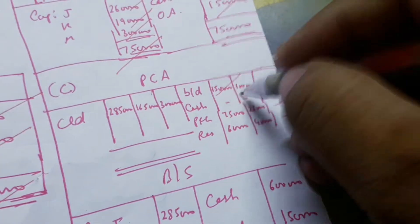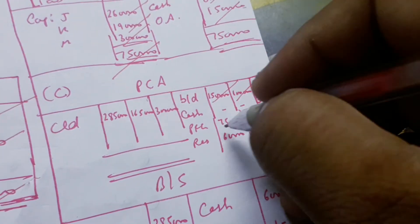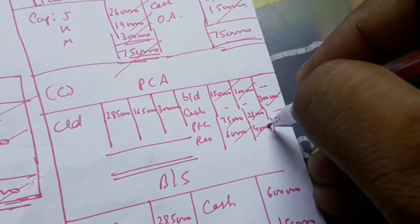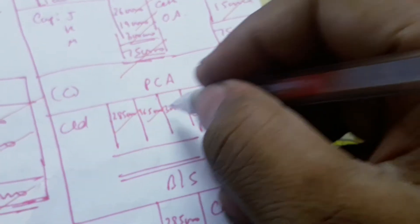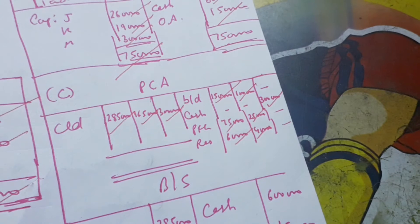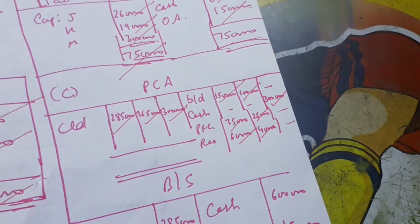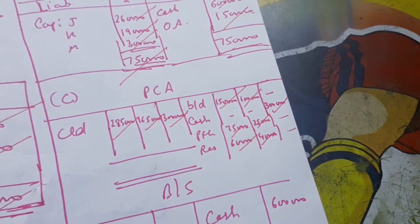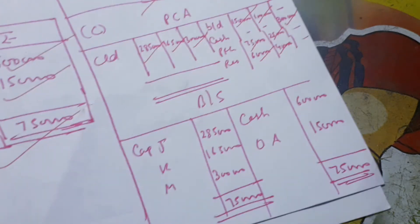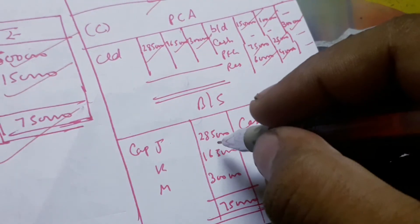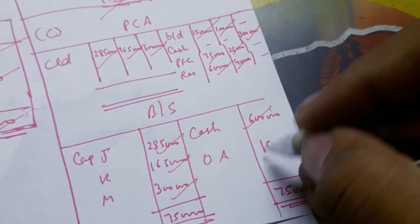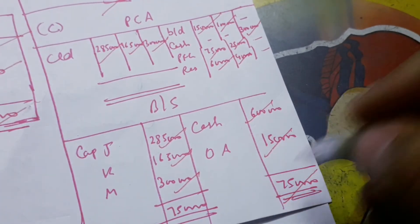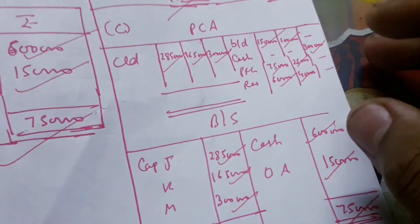In Case 3, the existing partners have 5.11 lakh, new partner 3 lakh, giving 5.5 lakh when saving money. The balance sheet shows $2.50 and $1.63, with totals of $6.5 and $5.6, and $6.6 cash and other assets. Good question for practice.